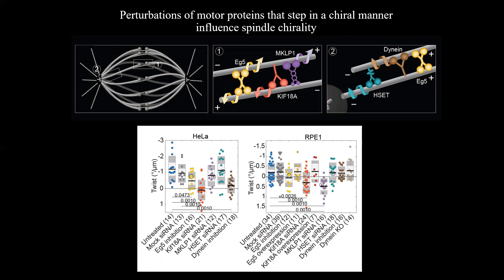In agreement with our previous work on HeLa cells, we found that acute inhibition of EG5, shown here in bright yellow, decreased the left-handed spindle twist in both HeLa and RPE1 cells. Depletion of KIF18a, shown in bright red, abolished spindle twist in HeLa cells and intriguingly resulted in right-handed twist in RPE1 cells, causing approximately 71% of RPE1 spindles to twist in the right-handed fashion.